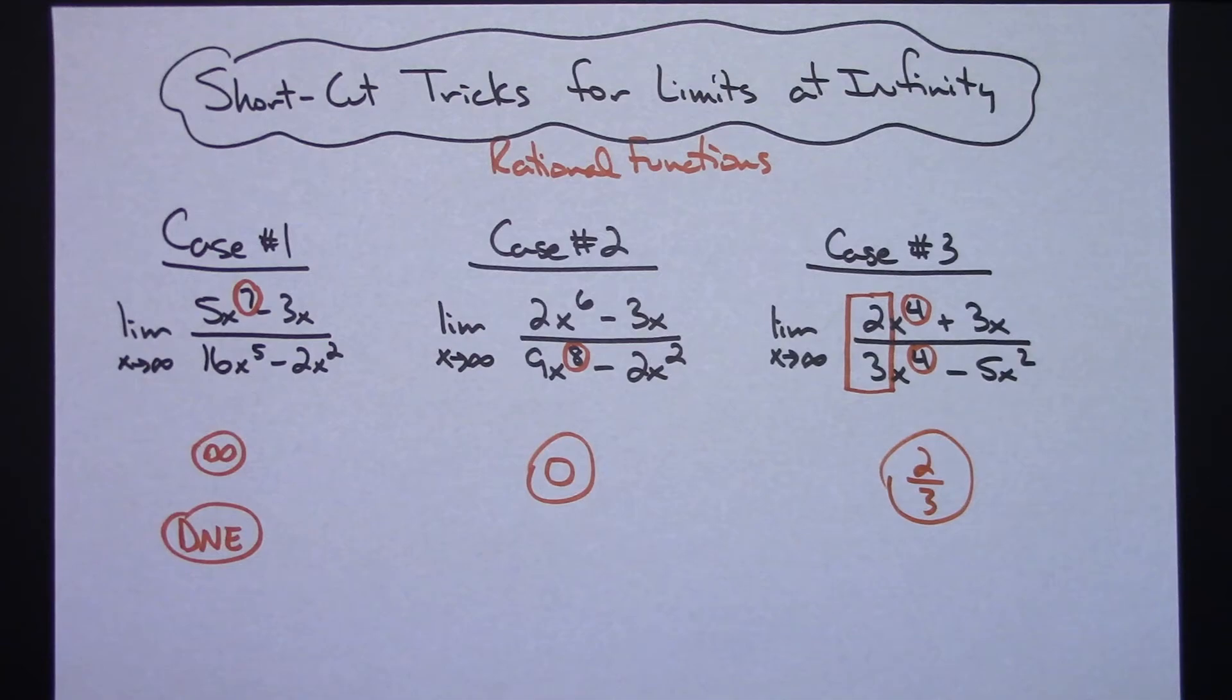So three very quick and easy to memorize shortcut tricks for doing those limits at infinity for rational functions. And if you remember your rules for horizontal asymptotes, they are very close to those shortcut rules for horizontal asymptotes.